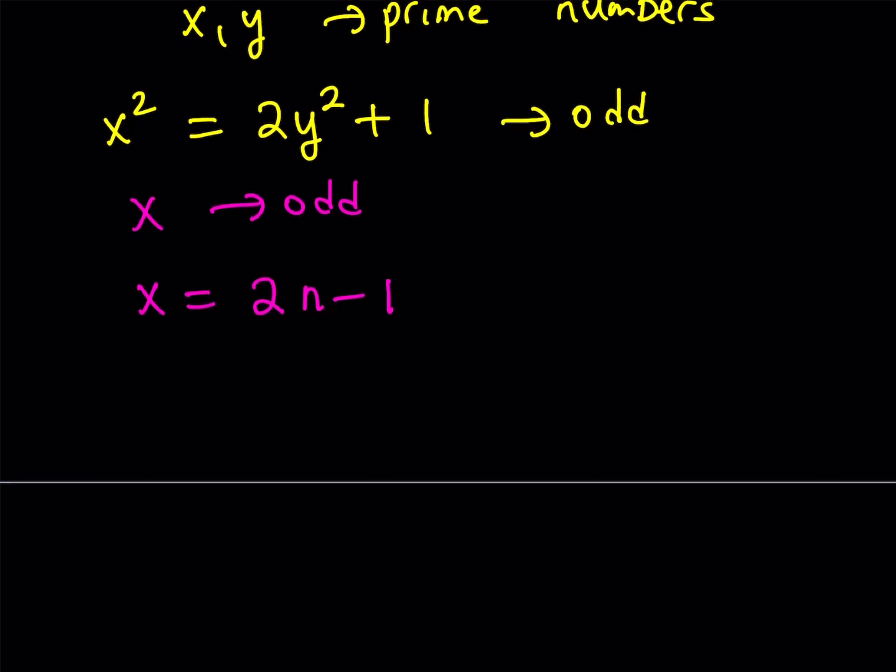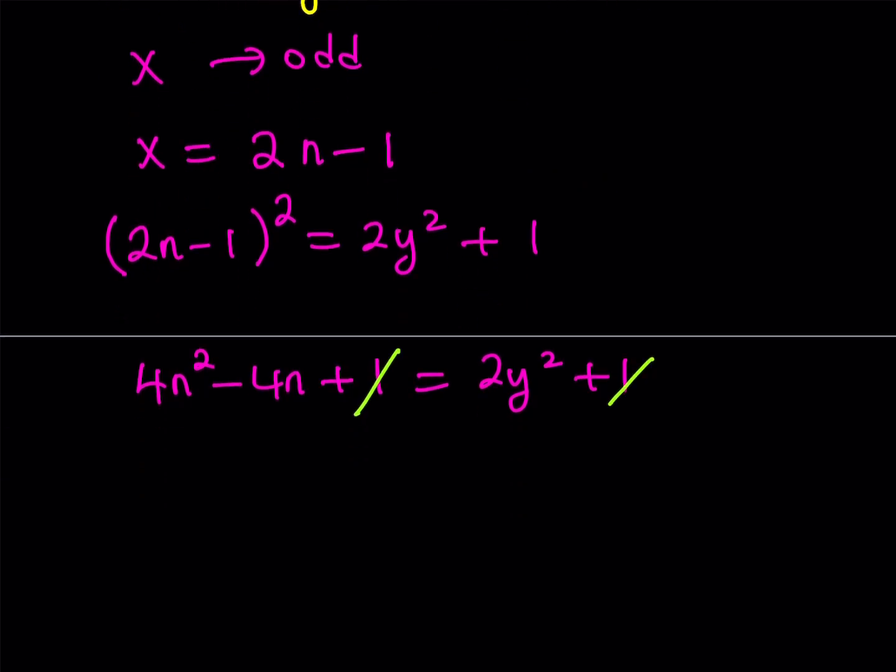Having said that, we can just go ahead and replace x with 2n minus 1 on the left hand side. Let's go ahead and do that. Replace x with 2n minus 1, and go ahead and square that. You're going to get 4n squared minus 4n plus 1 is equal to 2y squared plus 1. Obviously, in this case, you know that the 1 is going to cancel out, leaving us with a simpler expression. Moreover, we can divide both sides by 2, which is nice because it's going to give us something simpler. 2n squared minus 2n is equal to y squared.